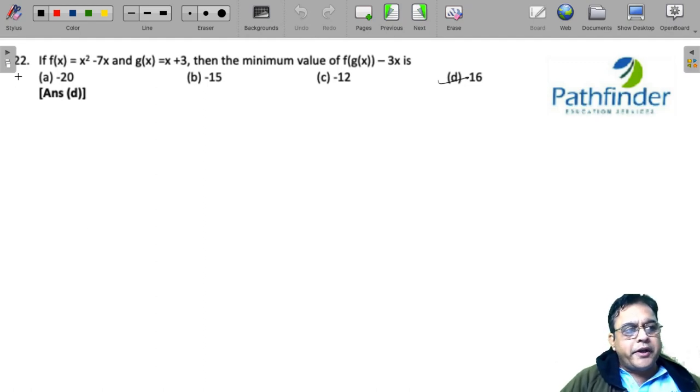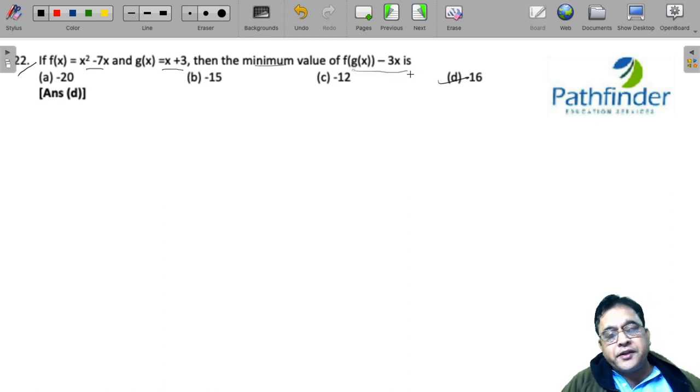CAT 21, slot 3, quantitative aptitude, question number 22. If f(x) = x² - 7x and g(x) = x + 3, find the minimum value of f(g(x)) - 3x.